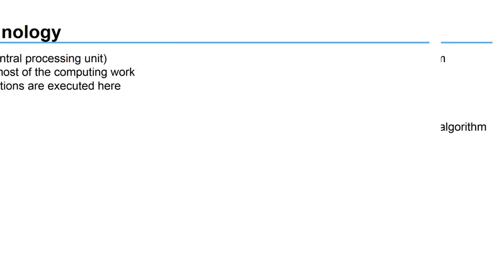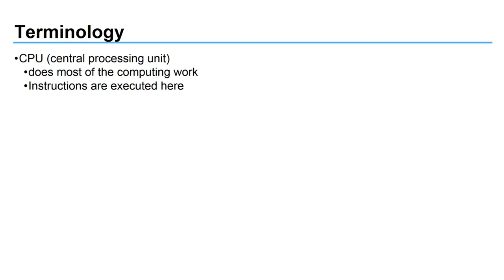Let me also talk about some basic terminology. The CPU — the central processing unit — is the brain of the computer. This is where most of the work is being done and where instructions are executed.